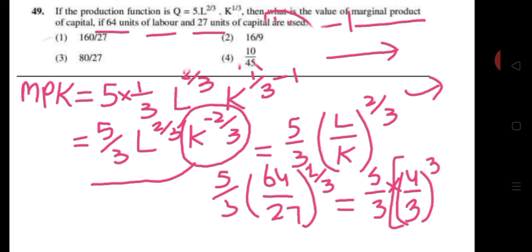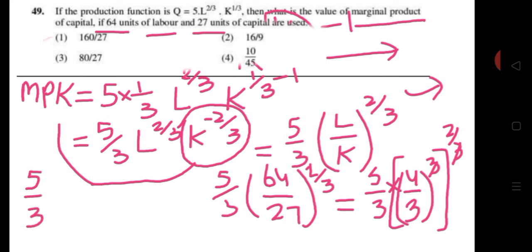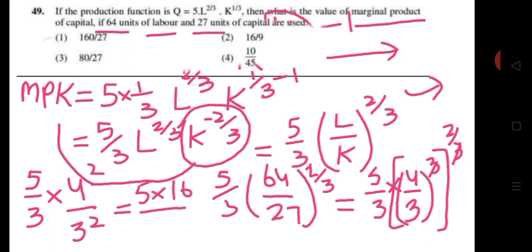The exponents 3 and 2/3 multiply: the 3's cancel, leaving (4/3)^2. So we have 5/3 × (4/3)^2 = 5/3 × 16/9 = 80/27. So the correct option is the 3rd option, that is 80/27.